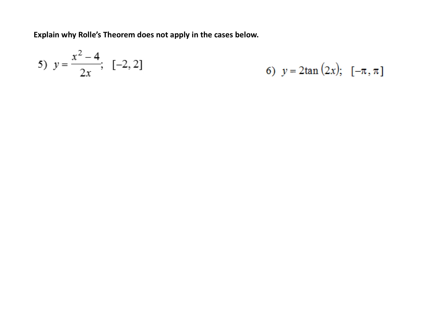So the question says, explain why Rolle's theorem does not actually apply in the cases below. So in order to use Rolle's theorem, we need to have a differentiable continuous function. And number five is called a rational function. And rational functions, meaning fractions, have holes and vertical asymptotes. And things of those nature will actually make the function discontinuous, and therefore the theorem doesn't apply.